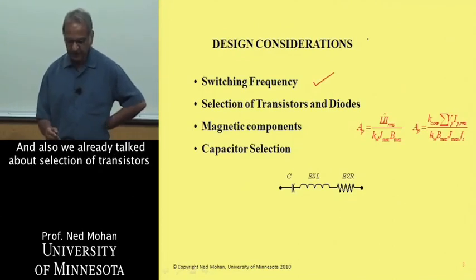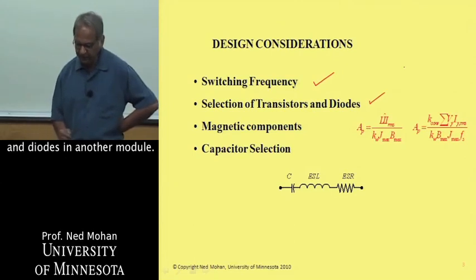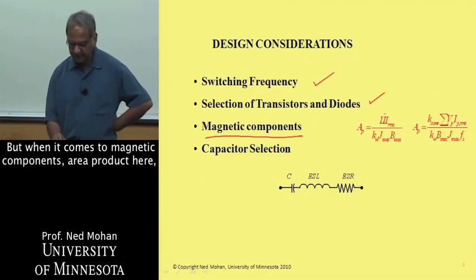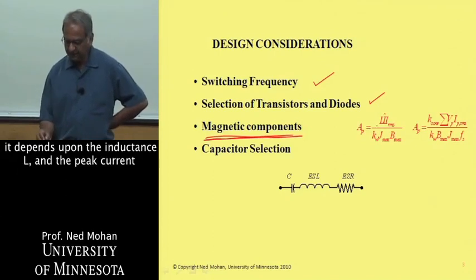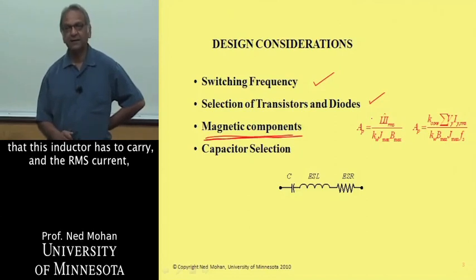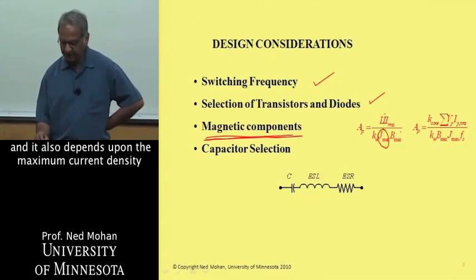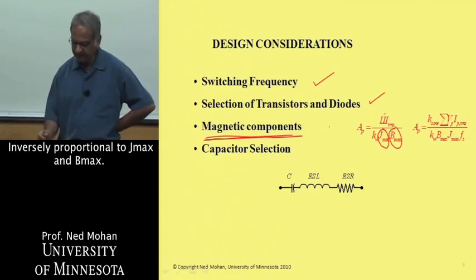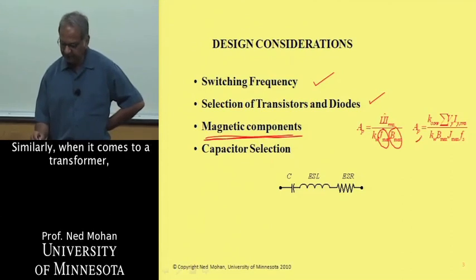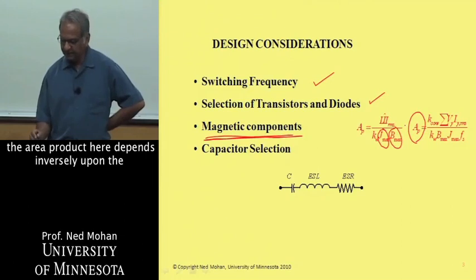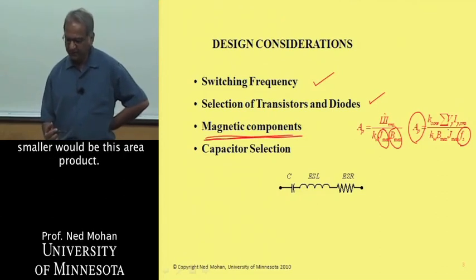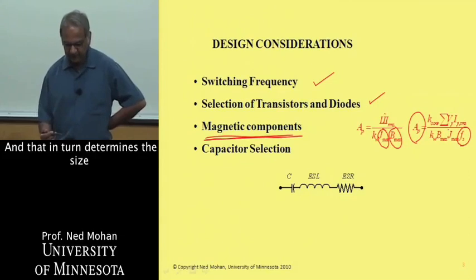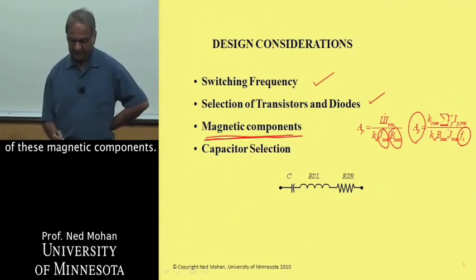When it comes to design considerations, we'll look at the effect of switching frequency. When it comes to magnetic components, the area product depends upon the inductance L and the peak current that the inductor has to carry and the RMS current. It also depends upon the maximum current density and maximum flux density, inversely proportional to Jmax and Bmax. Similarly, for a transformer, the area product depends inversely upon the switching frequency — higher the switching frequency, smaller would be the area product — which in turn determines the size of these magnetic components.